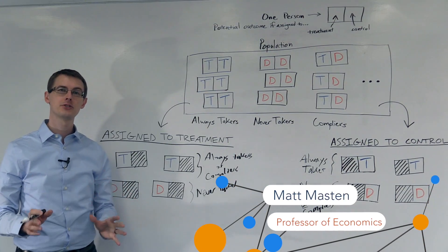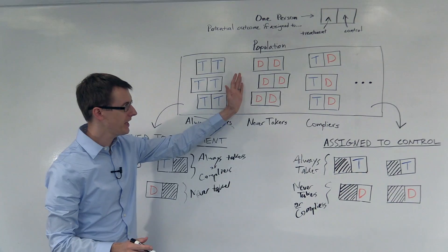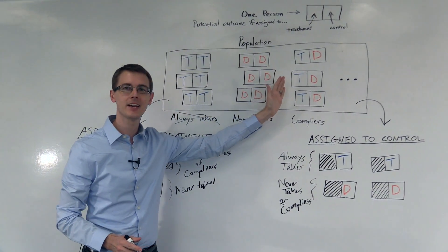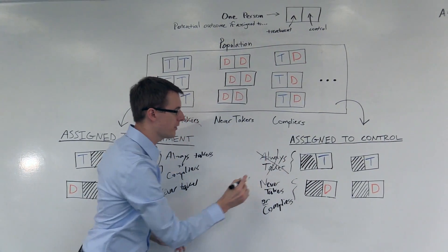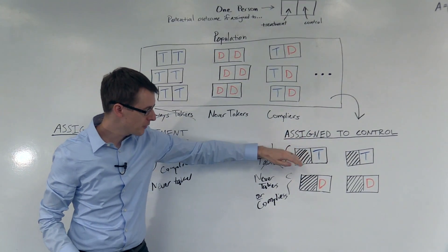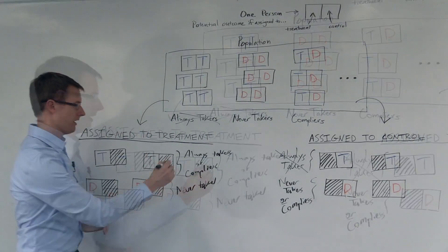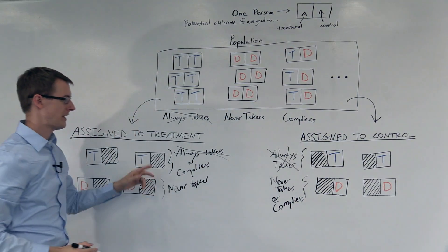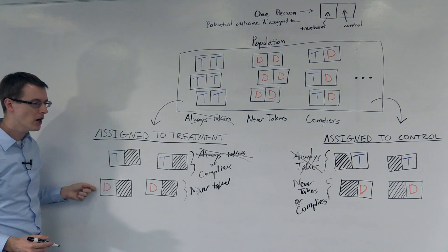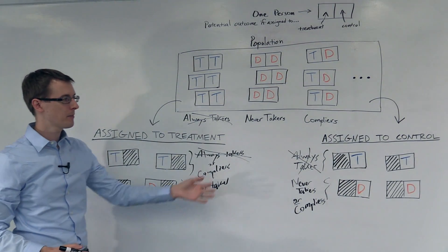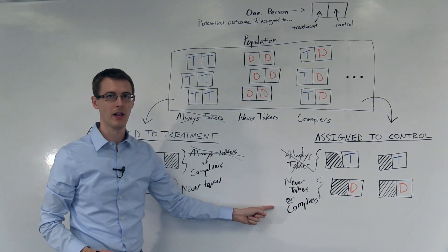Just for simplicity, I'm going to assume that there are no always-takers in the population — that we only have never-takers and compliers. That means over here in the control group, there are no always-takers. Everybody is either a never-taker or a complier. And over here in the treatment group, we also don't have any always-takers. So we know these people are compliers and we know these people are never-takers. But the problem is, over here in the control group, we don't know whether these people are never-takers or compliers.